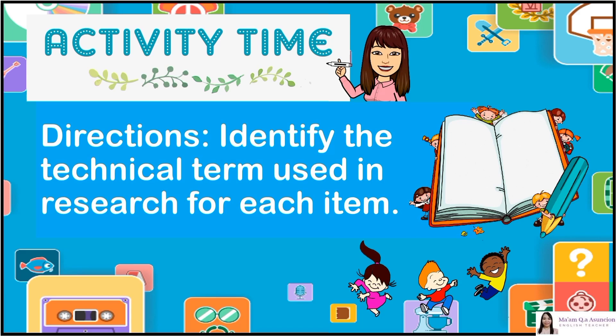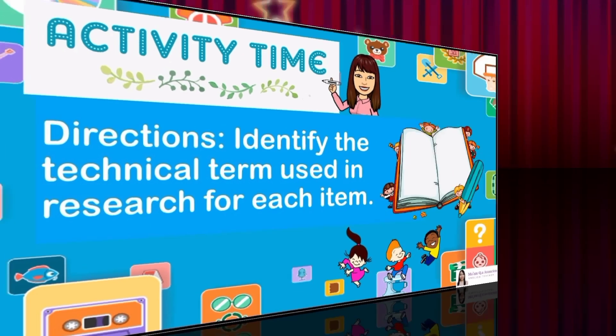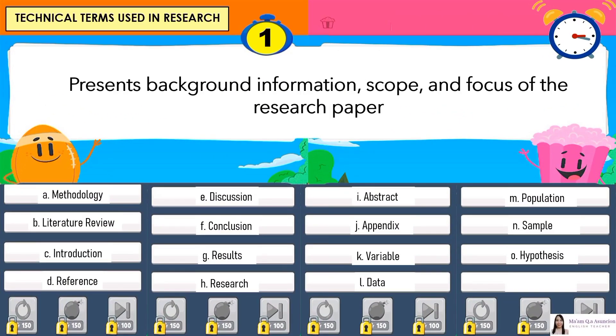Now let's have an activity. Directions: Identify the technical term used in research for each item. Number 1: Presents background information, scope, and focus of the research paper. Answer is C. Introduction.